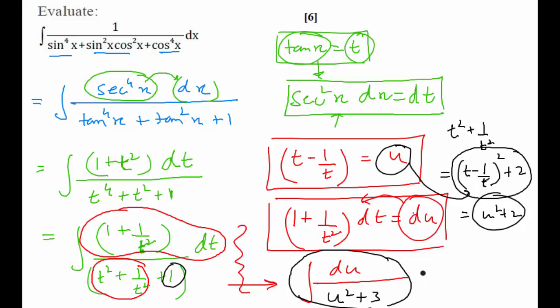du upon u square plus 3 is what? In terms of tan inverse, 1 upon root 3, tan inverse of u by root 3. This is our answer. But our answer should be in terms of x and not in terms of u. So let us substitute u. So u will be substituted as t minus 1 by t. But still that is not x. So then we substitute tan x in terms of t which will give us our final answer.